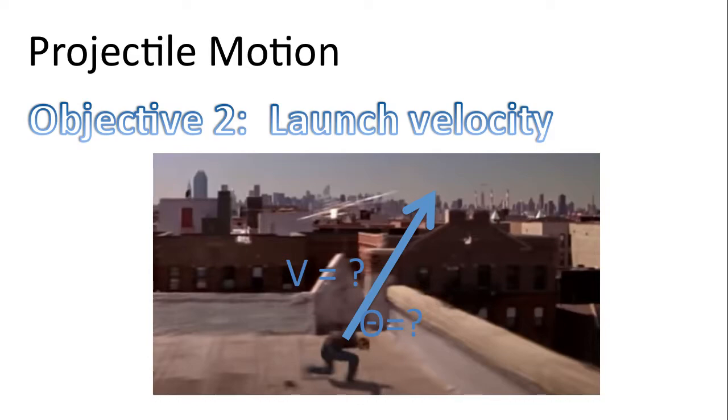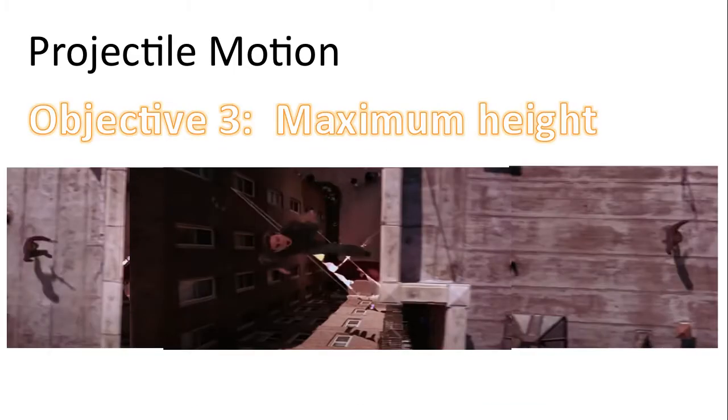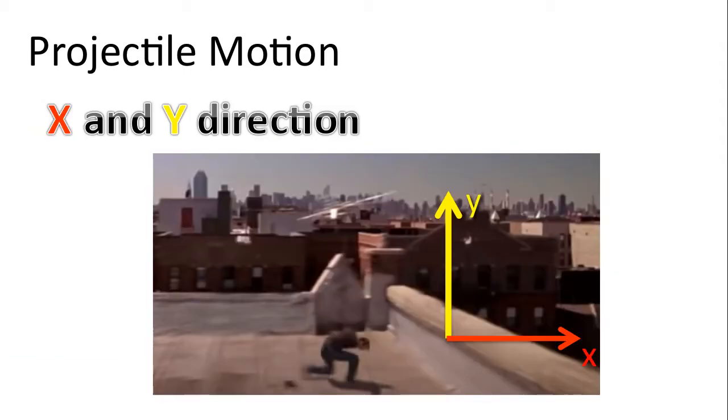Objective 2 is launch velocity and Objective 3 the maximum height. For all of the analysis today we'll be breaking apart the motion into an X and a Y direction.